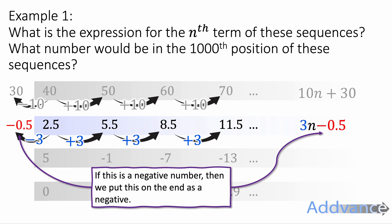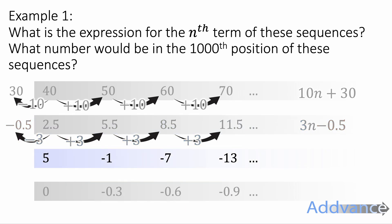Again, if it's a negative number, it's really important. So if the number you go backwards by is negative, it's going to go on the end as a negative. We get 3n minus 0.5 as the final answer. Next one, 5, -1, -7, -13. It's going down by 6 each time, so it's going to be -6n. And if you go backwards by adding 6, 5 plus 6 is 11. So the previous term would have been plus 11. So we get -6n plus 11.